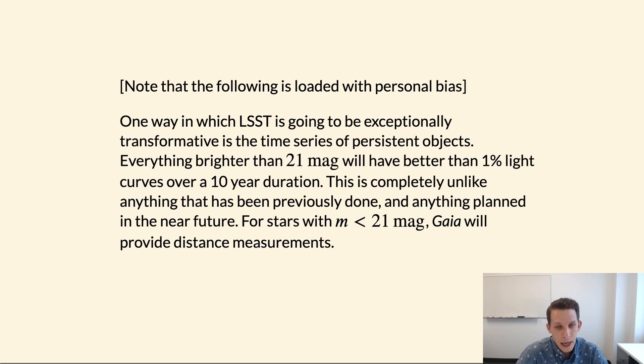Now, I contend, and I will admit I'm very biased here because my research is primarily focused in the time domain, but I contend that one of the ways in which LSST and the Rubin Observatory are going to be exceptionally transformative is in the time series that they obtain, not so much of explosive transients, which is also a big area of interest, but actually in the time series of persistent objects, or stars, and in some cases galaxies, like an active galactic nucleus. To put some perspective into this, everything brighter than 21st magnitude will have photometry that is more accurate than 1 percent.